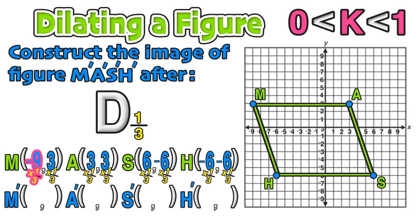We'll start with negative 9 times 1 third, which equals negative 3. 3 times 1 third equals 1. And we will continue this process of multiplying each x and y coordinate value by 1 third to find the coordinates of A prime, S prime, and H prime.